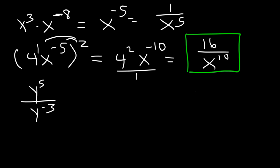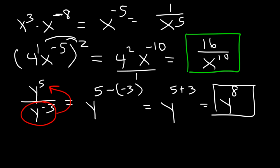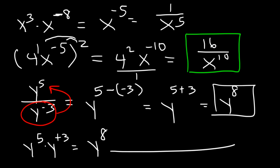That's the answer to the second problem. Now for the third one, when dividing by a common base, you need to subtract the exponents. Start with the top number: 5 minus the bottom one, negative 3. 5 minus negative 3 is the same as 5 plus 3, so the answer is y to the 8th power. Going back to this example, you could also move the variable to the top — it's going to be y to the 5th times y to the positive 3 — and then add 5 plus 3 to get 8, which gives you the same answer.